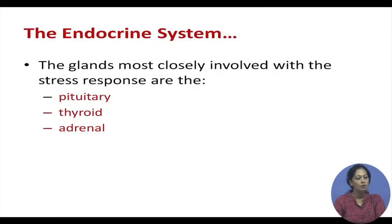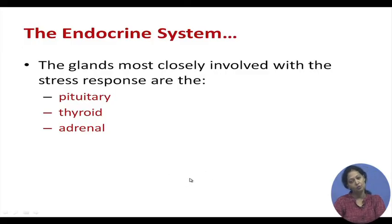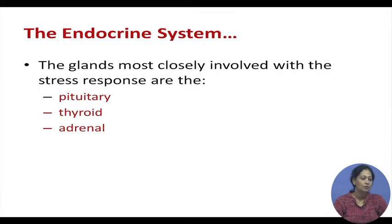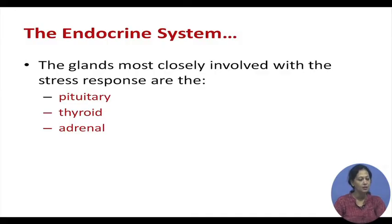The major endocrine glands involved with stress are the pituitary gland (the master gland), the thyroid gland, and the adrenal gland. The thyroid gland is frequently implicated in stress — hyperthyroidism can result from long-term chronic stress dysregulating thyroid secretion. Today, however, we shall focus more on the pituitary and adrenal glands, since we are discussing the HPA axis.